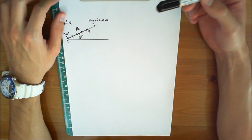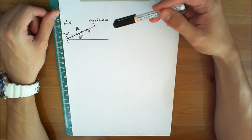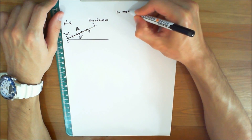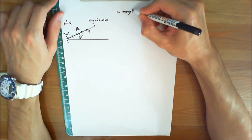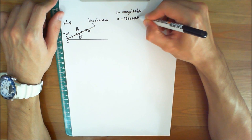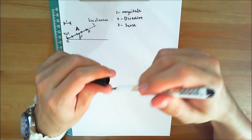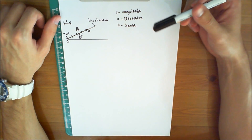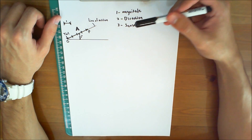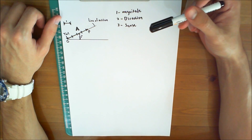Let's try to understand a vector graphically. A vector is represented graphically by an arrow, which is used to define its magnitude, direction, and sense. The magnitude of the vector is the length of the arrow. The direction is defined by the angle between a reference axis and the arrow's line of action. And the sense is indicated by the arrowhead.